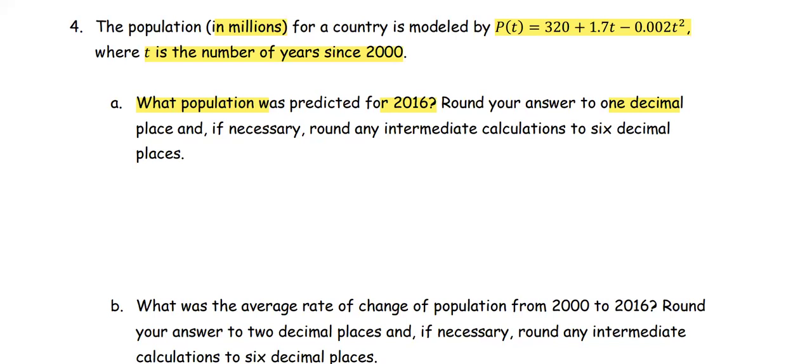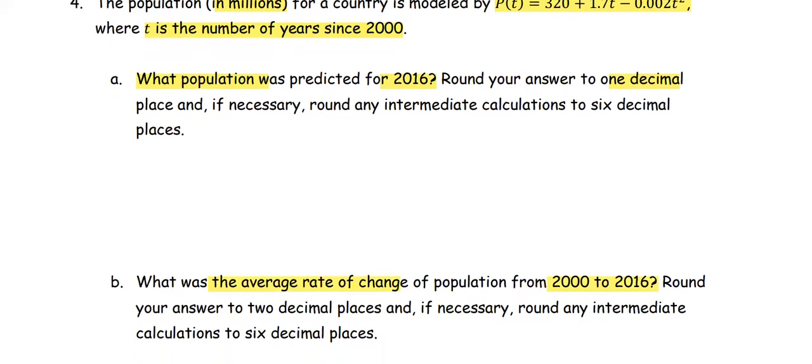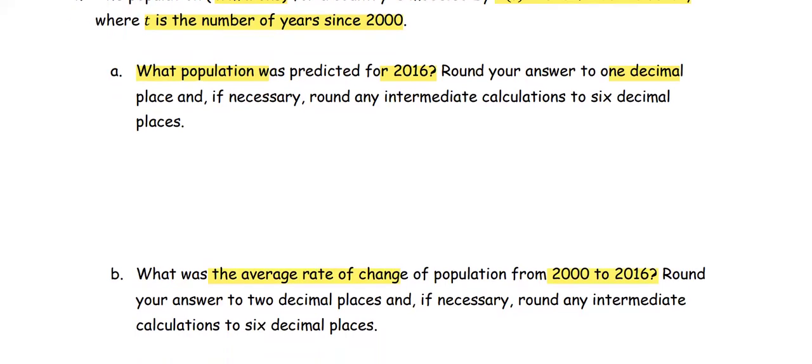What was the average rate of change of the population from the year 2000 to the year 2016? Round your answer to two decimal places. That's the final answer. If necessary, round any intermediate calculation to six decimal places.